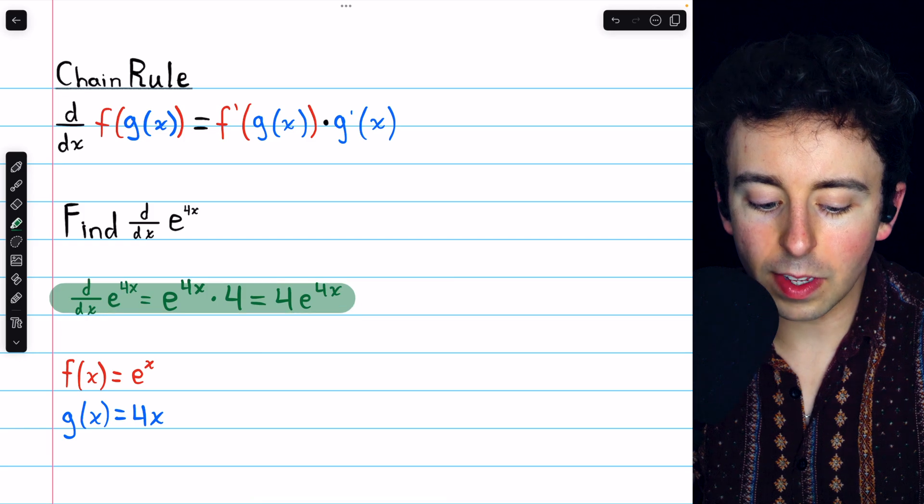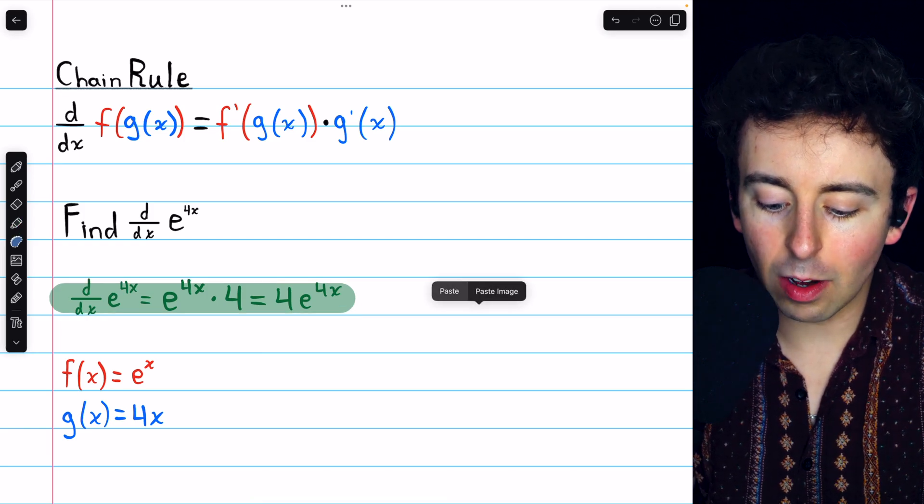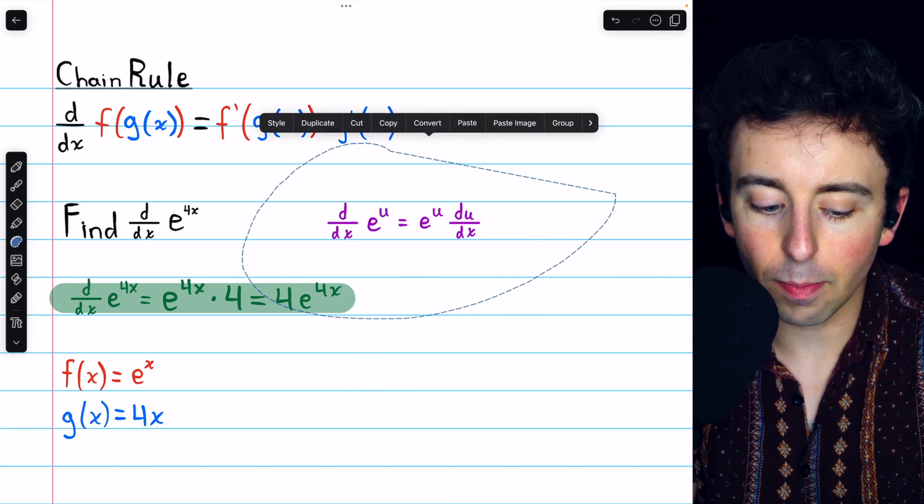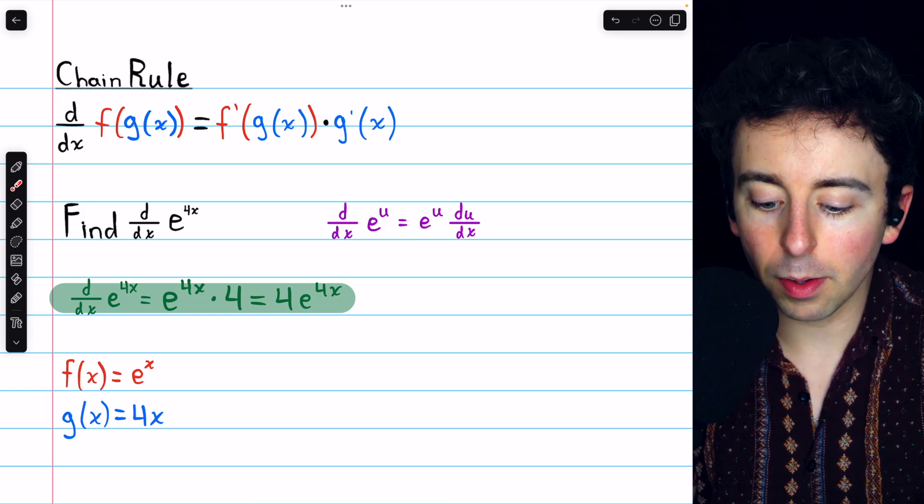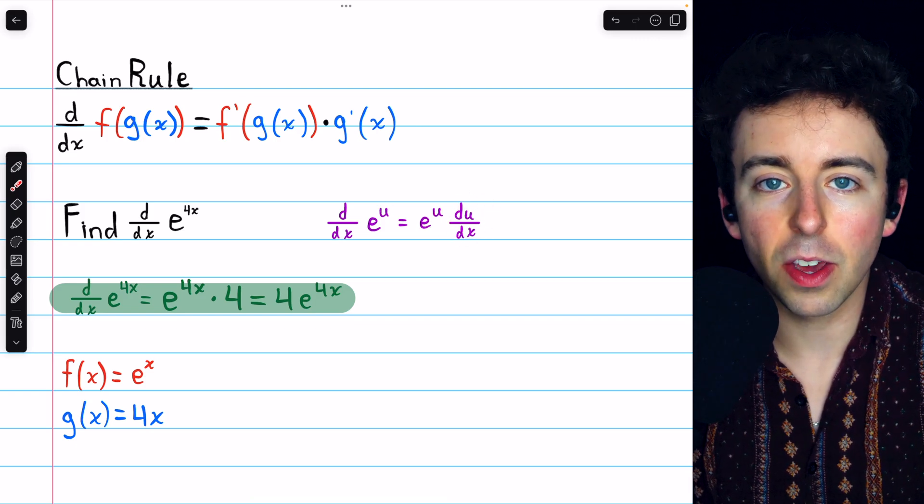And that's how to find the derivative of e to the 4x. In general, the derivative of e to the power of some function u is just e to the u multiplied by the derivative of u.